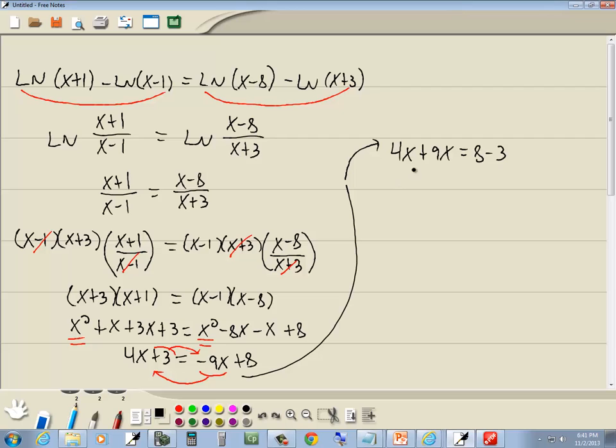Combine together the like terms. 4x plus 9x is 13x. 8 minus 3 is 5. Then divide both sides by 13, trying to get the x by itself. These 13s cancel. Then we've got x is equal to 5 thirteenths.